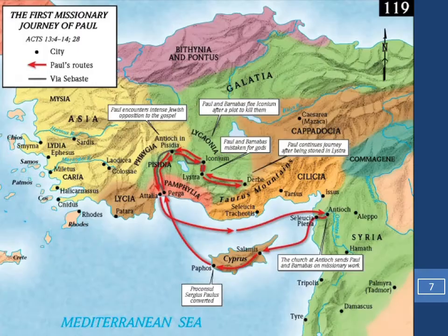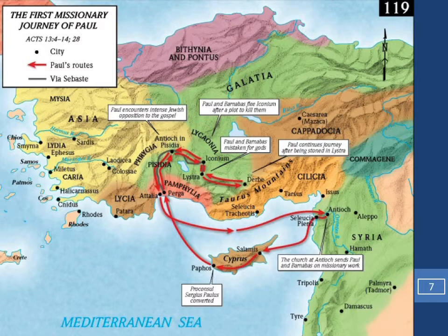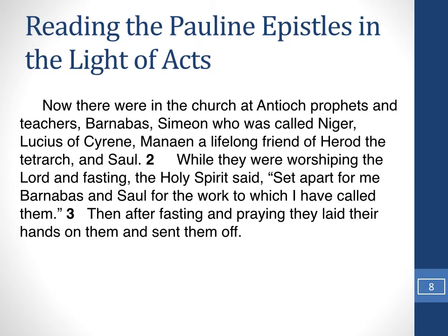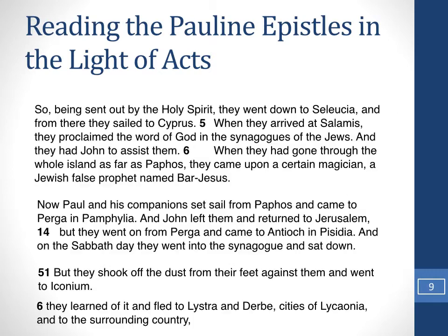I've provided a number of maps. This map gives you a sense of his first missionary journey. Most illustrated Bibles outline the three missionary journeys and the cities he visited. You'll see at the top of the map a reference to Acts 13, verses 4 through 14 and verse 28. In Acts 13, Paul is sent out on this missionary journey from Antioch, where he's set apart by the Holy Spirit, laid hands on by the elders, and after prayers and fasting they send him off. Both he and Barnabas go off on the first missionary journey.